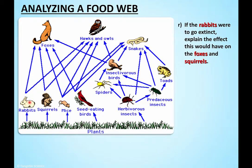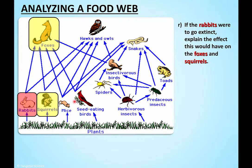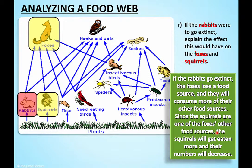What if rabbits go extinct? Foxes normally eat rabbits, squirrels, mice, and birds, but now they have one less thing on their menu. They'll eat more squirrels, more mice, more birds. With fewer squirrels and mice eating plants, the grass and plants have a chance to grow more. The fox makes up his diet with more of everything, so the plant population starts to overpopulate - plants are celebrating.